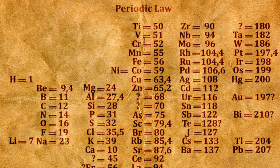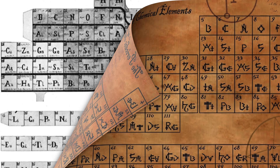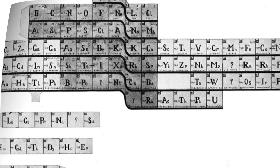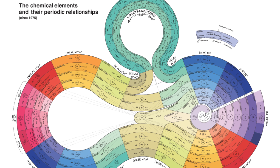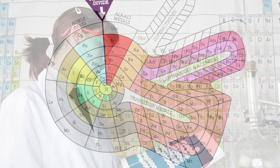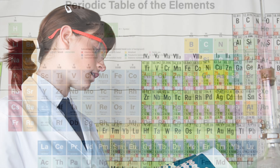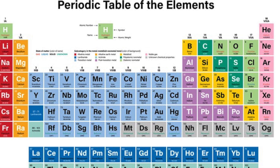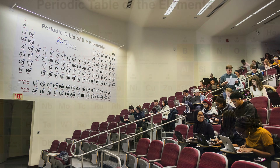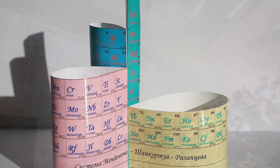It took time for the periodic table to develop into its current form. In the 20th century, there were curved forms of the periodic table such as spirals and helices, which were generally deemed easier for students to use compared to a flat two-dimensional table. Eventually, a flat two-dimensional table was adopted because it fits easily onto one page or as a poster hanging on the wall.